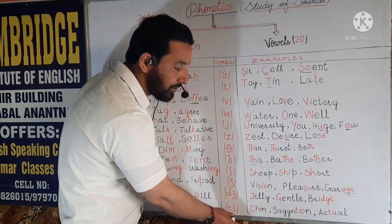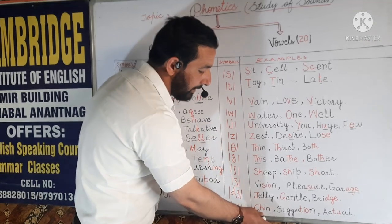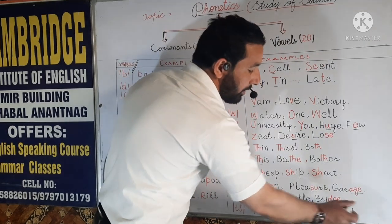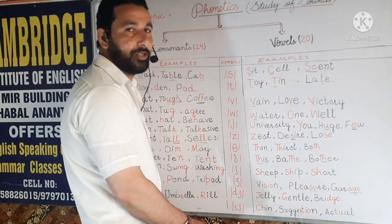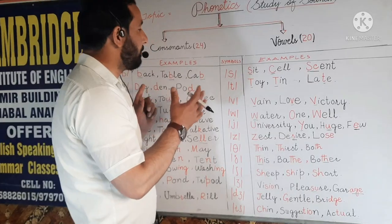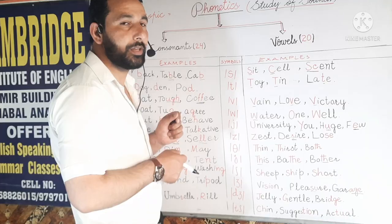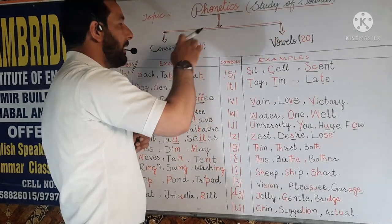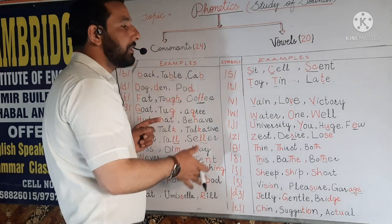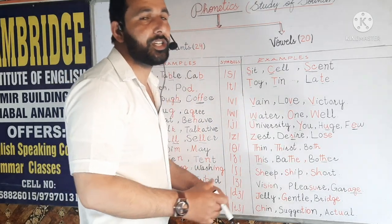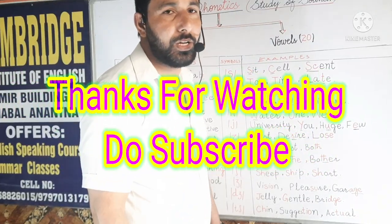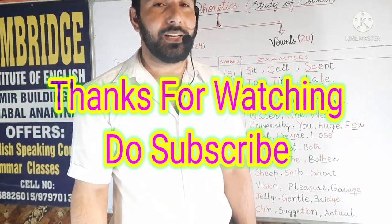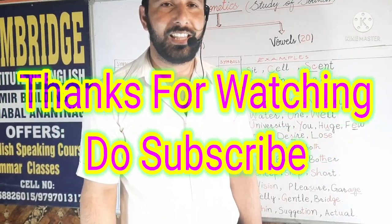Next example is CH. For example, we have 'chin', we have 'suggestion', and we have 'actual'. I hope you may have understood all these phonetic consonant sounds. If you understand these vowel phonetic symbols and consonant phonetic symbols, you yourself can decide the pronunciation of a word. Before you quit this video, I request you to subscribe to my YouTube channel and press the bell icon if you haven't yet. Thanks.